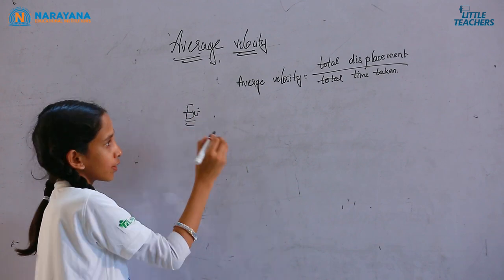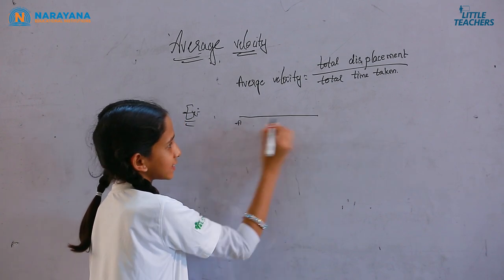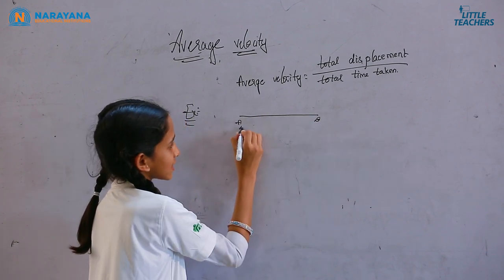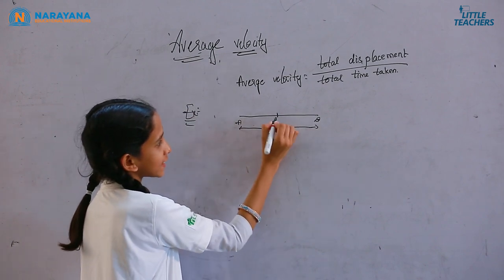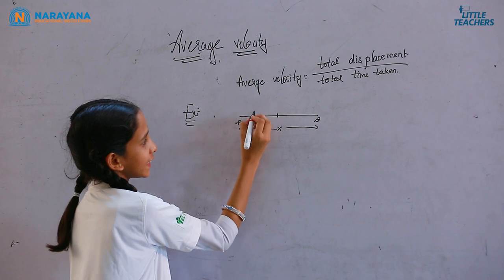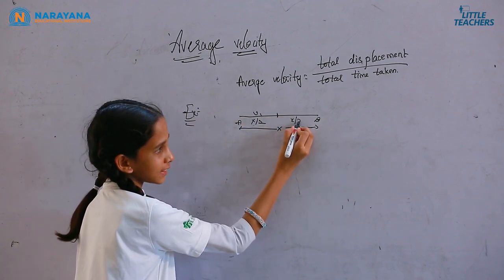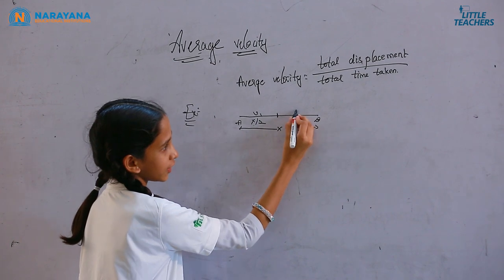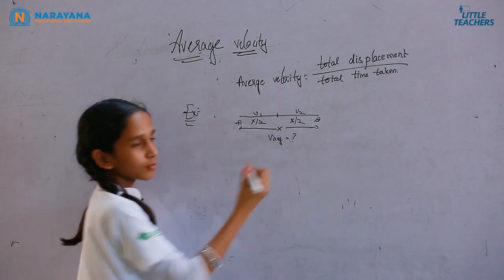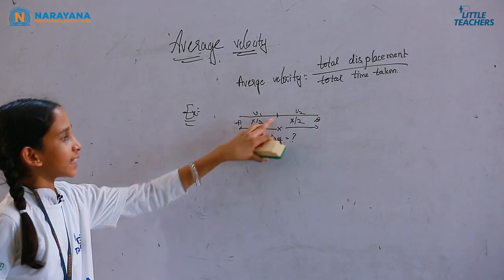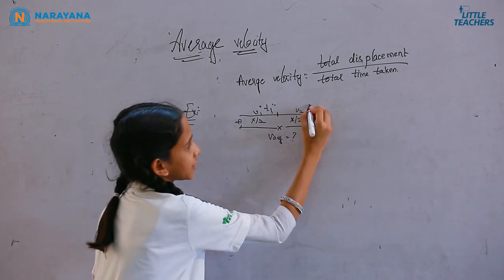Example: if a car travels in a straight line from A to B with total displacement x, half of the displacement (x/2) is covered with velocity v1, and the other half (x/2) is covered with velocity v2. Let the time taken for the first half be T1 and for the second half be T2. What is the average velocity?